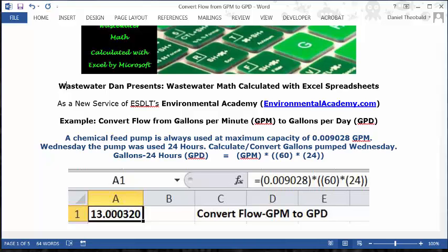And in cell A1 you will see this answer: 13.000320. So that's the answer doing this with multiple conversions.